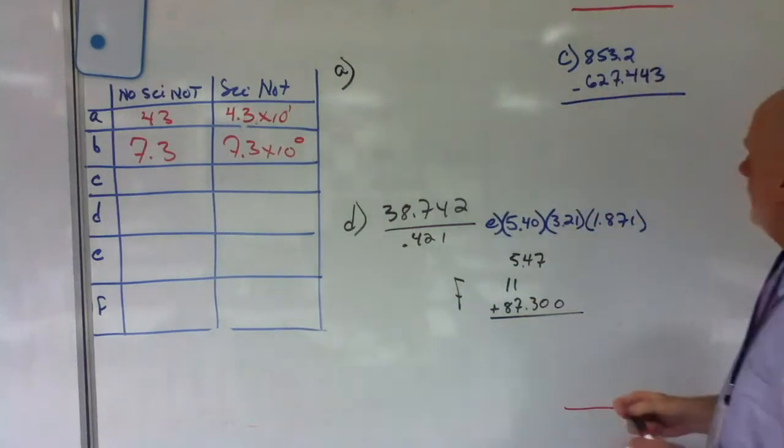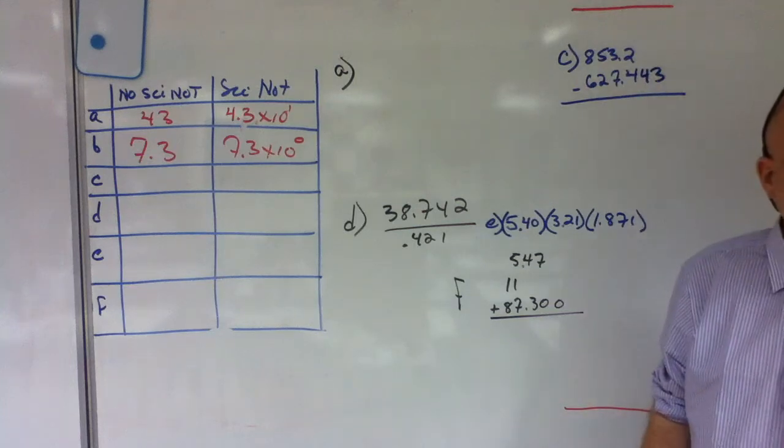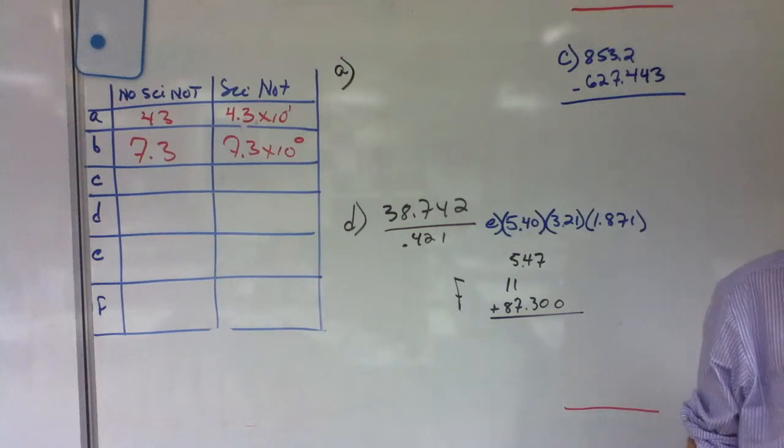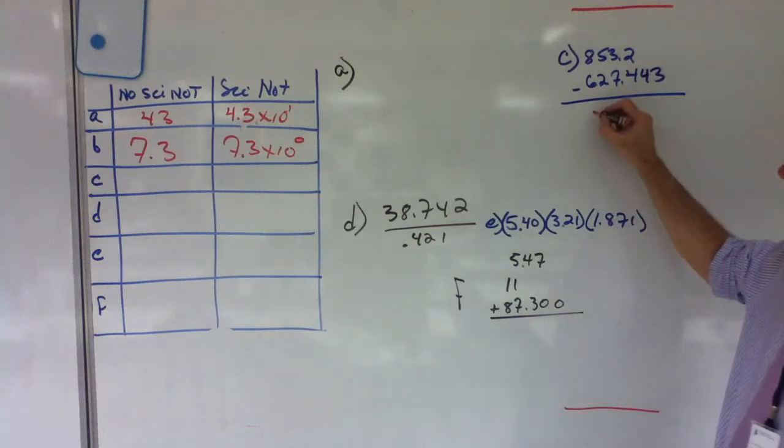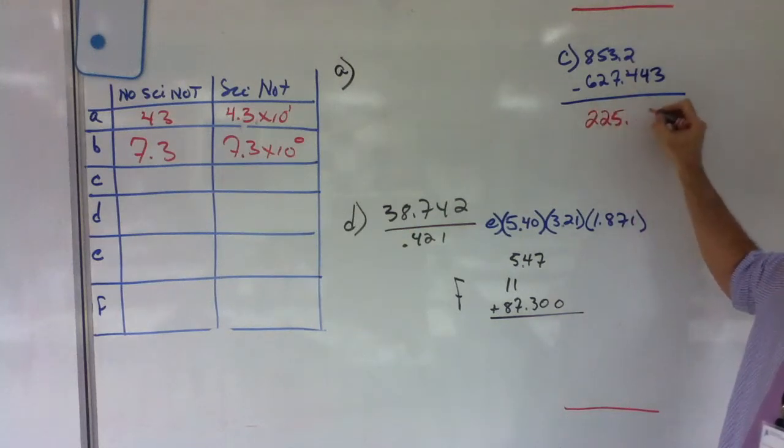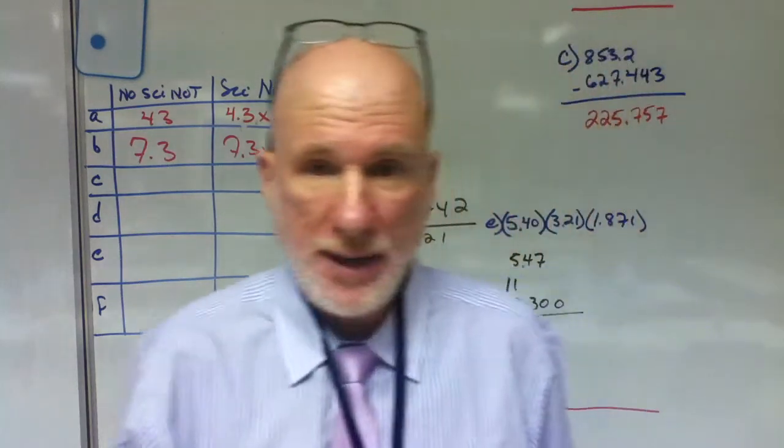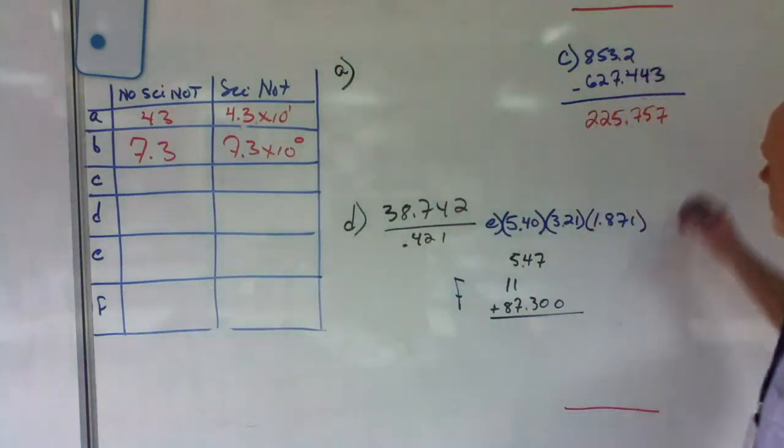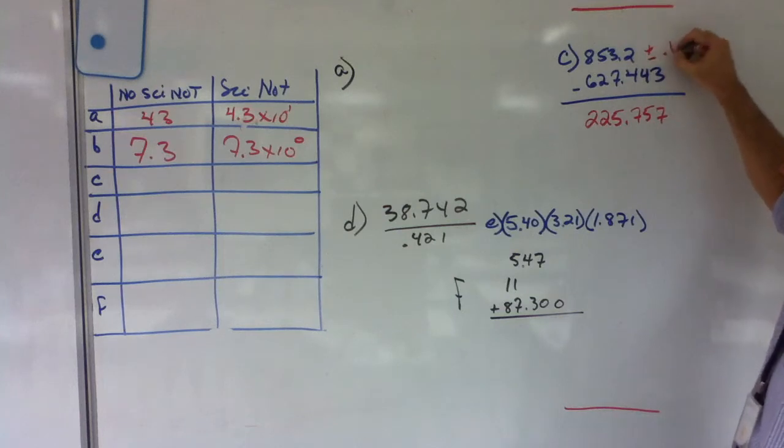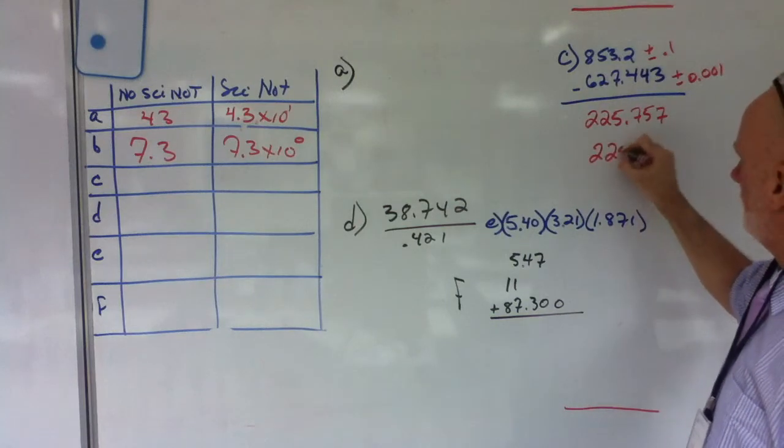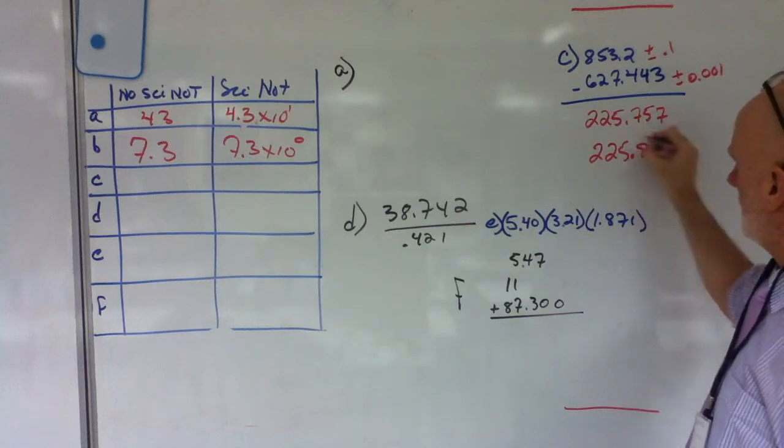Okay. So this is going to be subtraction. What are we going to do? What's the math there? Just give me the math answer. It's 225.757. And that is mathematically correct? Now, what must I round it to? This is plus or minus 0.1, plus or minus 0.001. So what do I round it to? 0.1. So the answer will be 225.8.